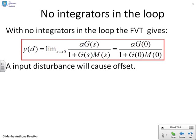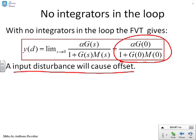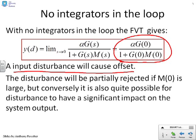What happens then if there are no integrators in the loop? Well, if there are no integrators in the loop and we apply the final value theorem as just shown, then we end up with this formula here, that the steady-state output dependence on the disturbance is alpha G of 0 over 1 plus G of 0 M of 0, where you remember that alpha was the magnitude of the input disturbance. And the key summary is the input disturbance causes an offset in the output. It causes the steady-state output to change. Disturbance will be partially rejected if M of 0 is large. However, it's quite possible for the disturbance to have a significant impact on the system output.